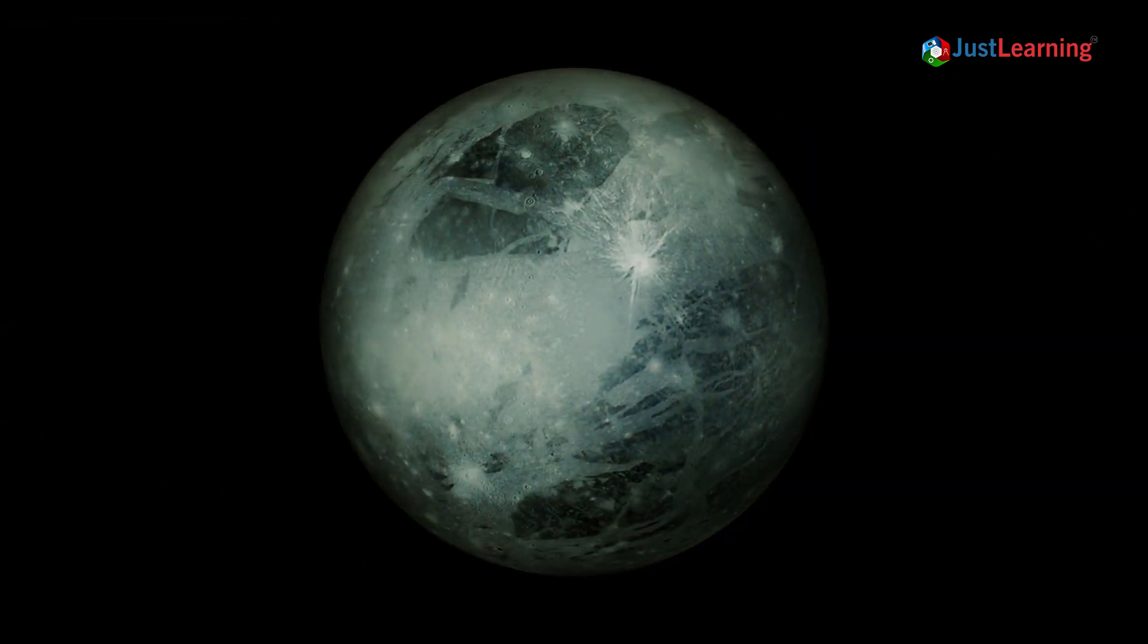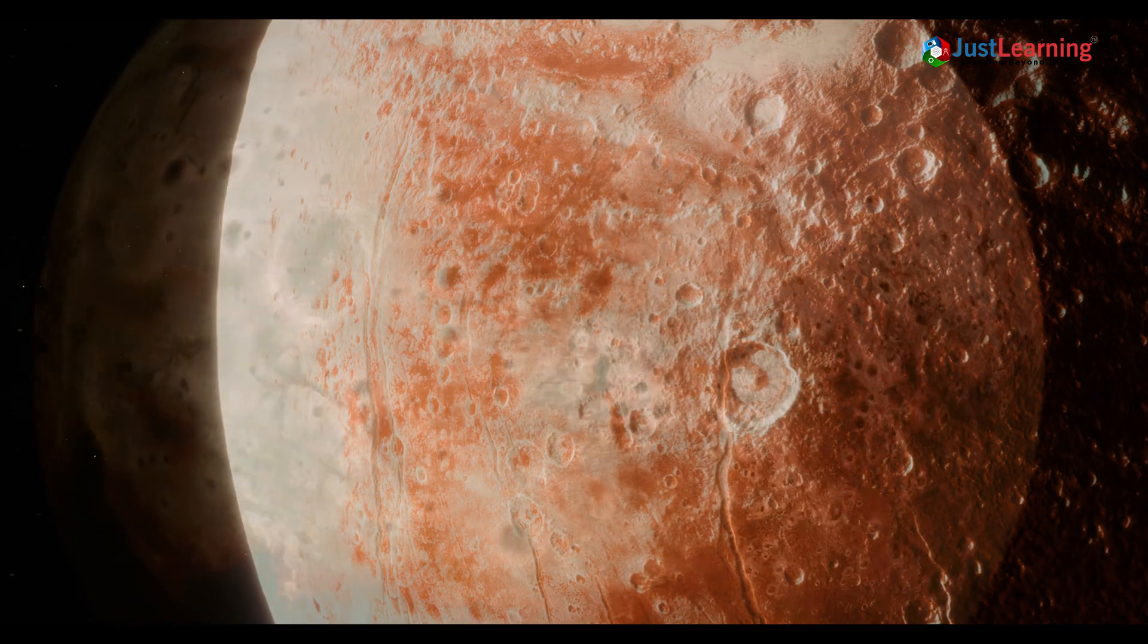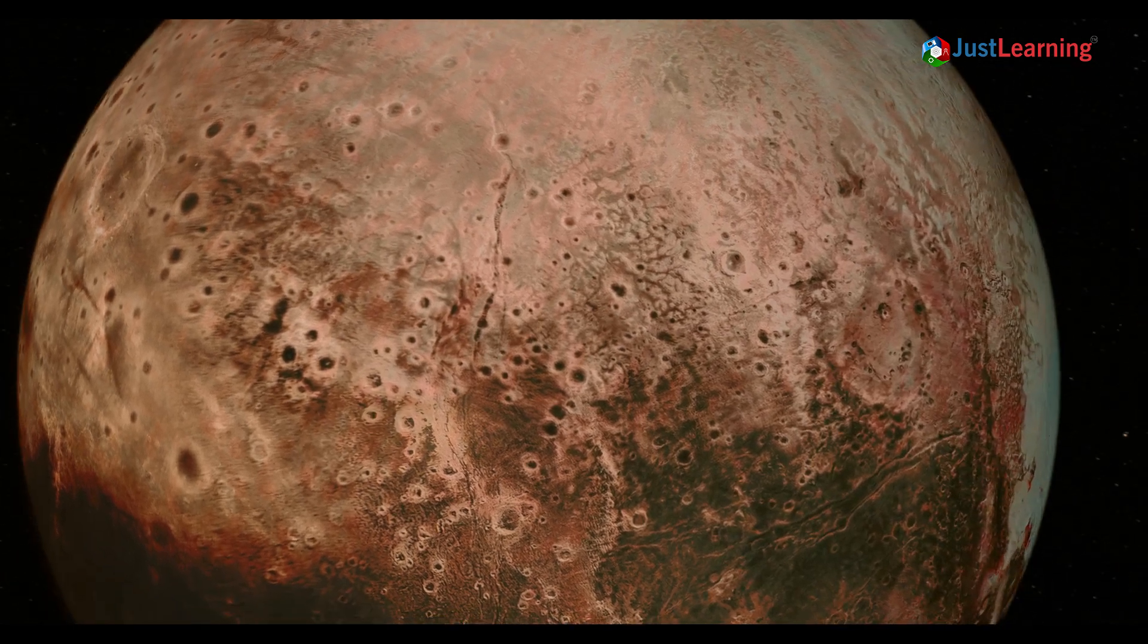Ten: Pluto is smaller than the United States. If you walk around the equator of Pluto, it would be the same distance as walking from London to Denver.